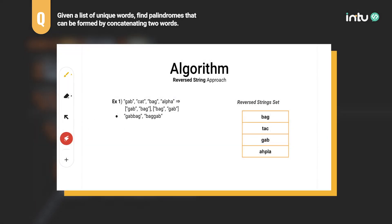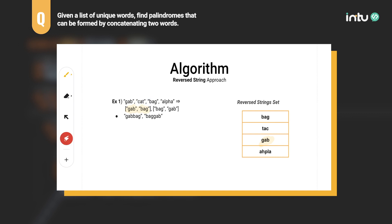Let's see what algorithm we can use. I noticed that for two strings with the same length to form a palindrome, one string needs to be the reverse of the other. So I would reverse each input string and save it in a set, then iterate through the input strings and check whether each word exists in the reverse string set. For example, reversing gap, cat, bag, alpha and putting them in a set — then checking if gap exists in the set. It does, meaning there's a palindrome pair. Cat does not exist, so there's no pair. Applying this logic finds the two palindromes.